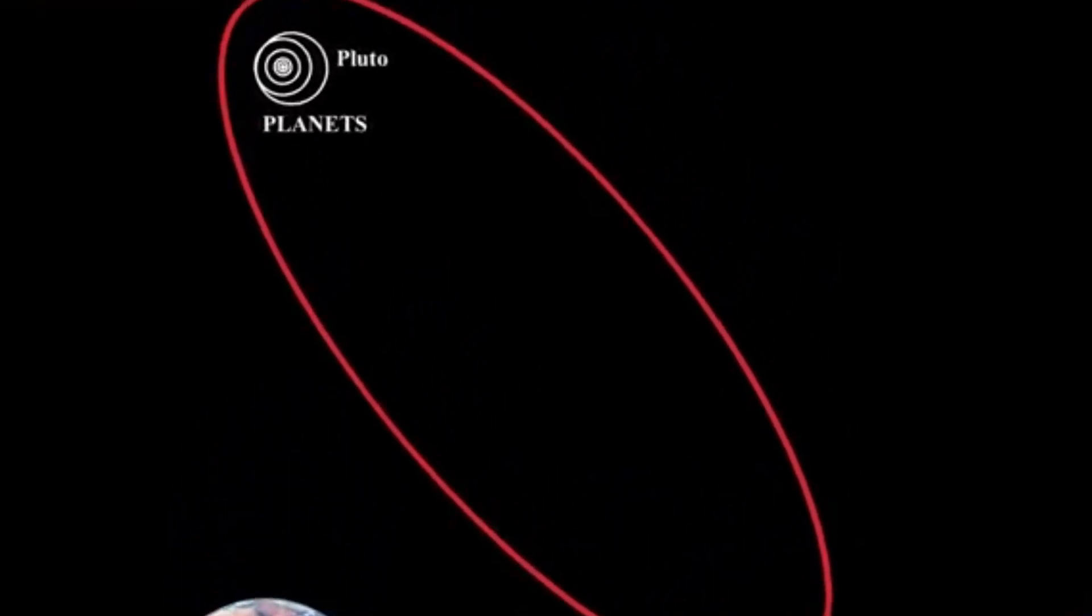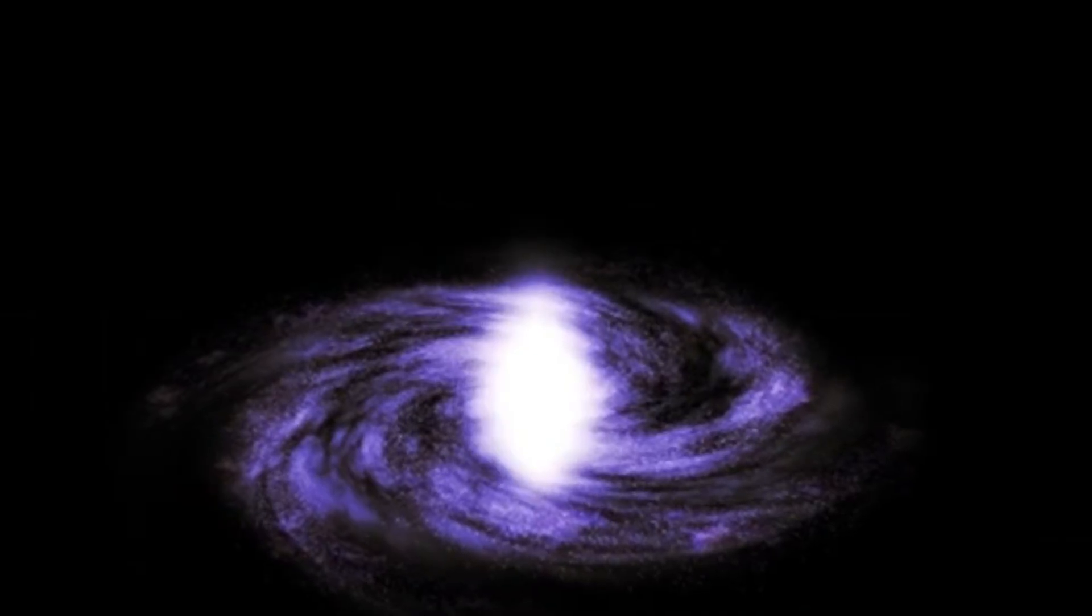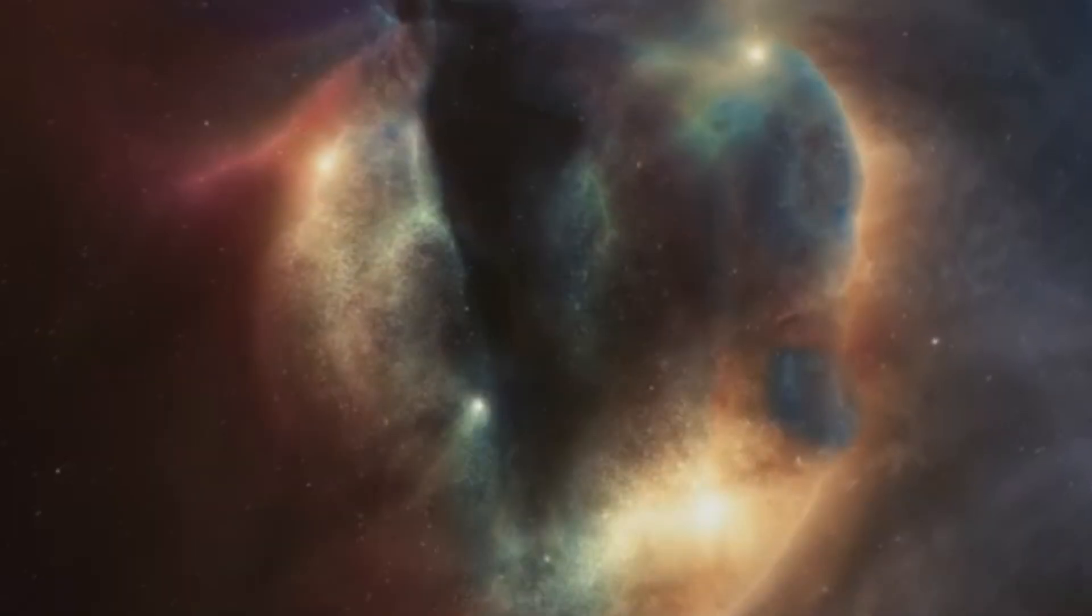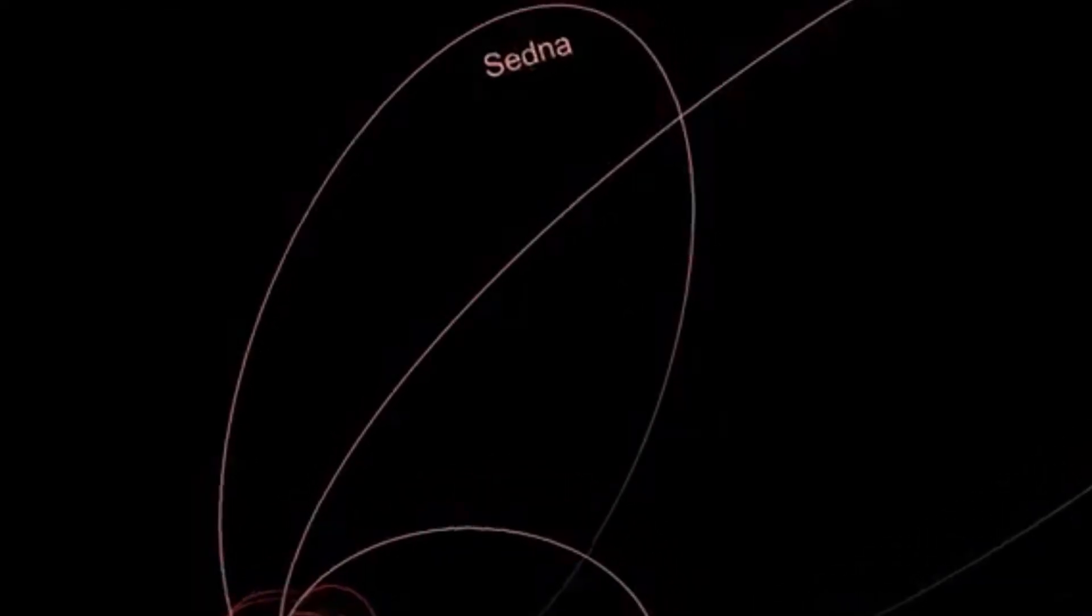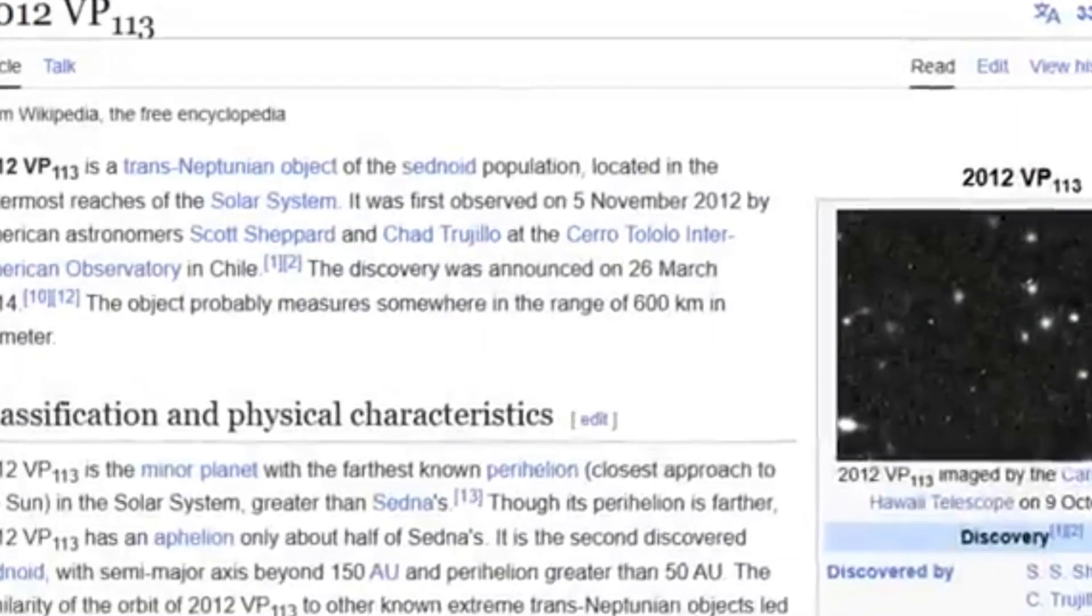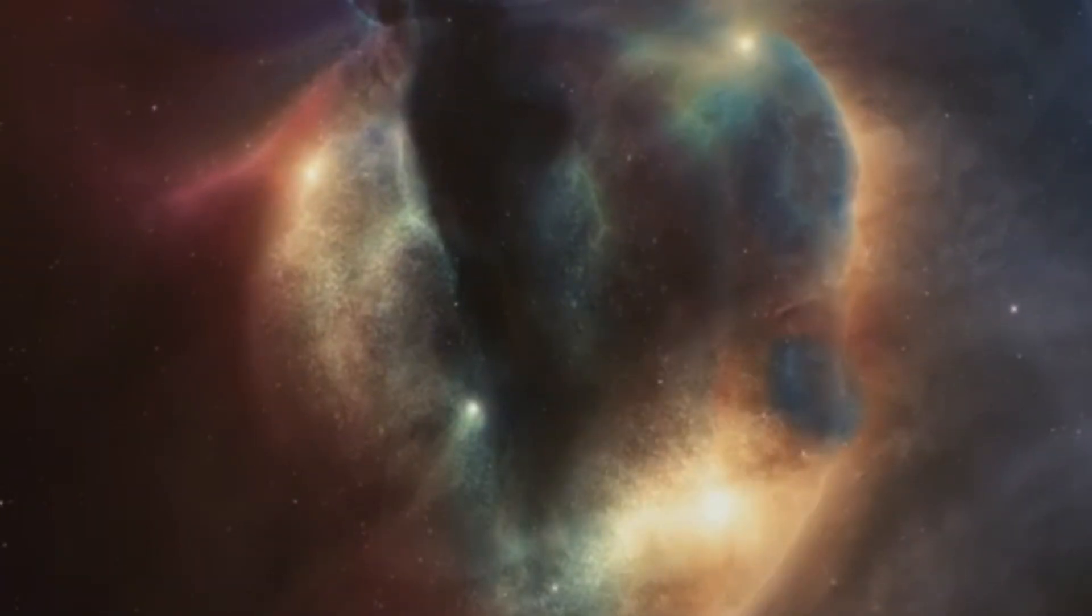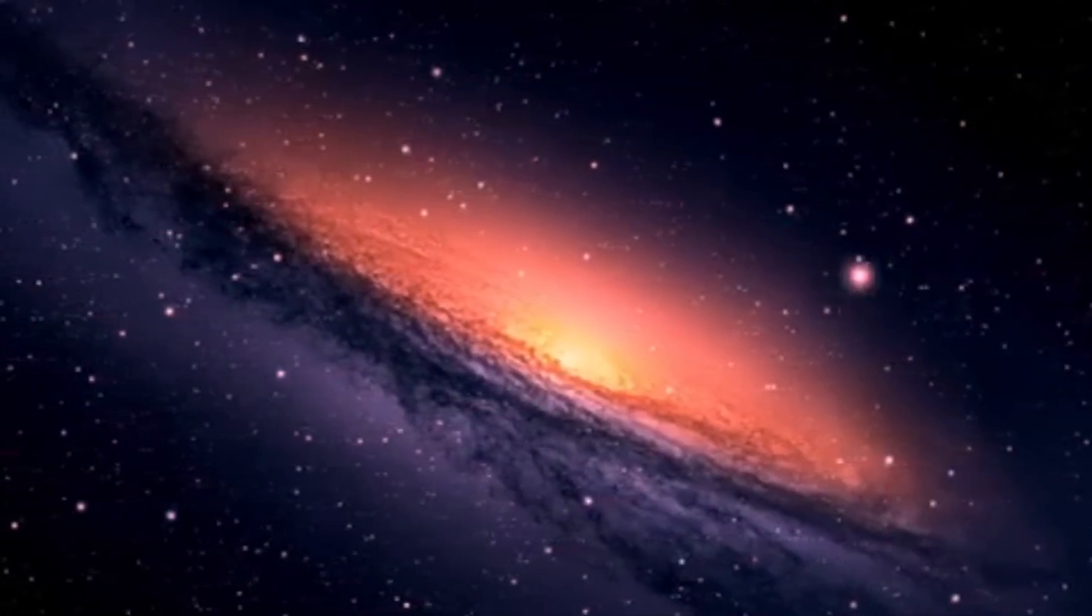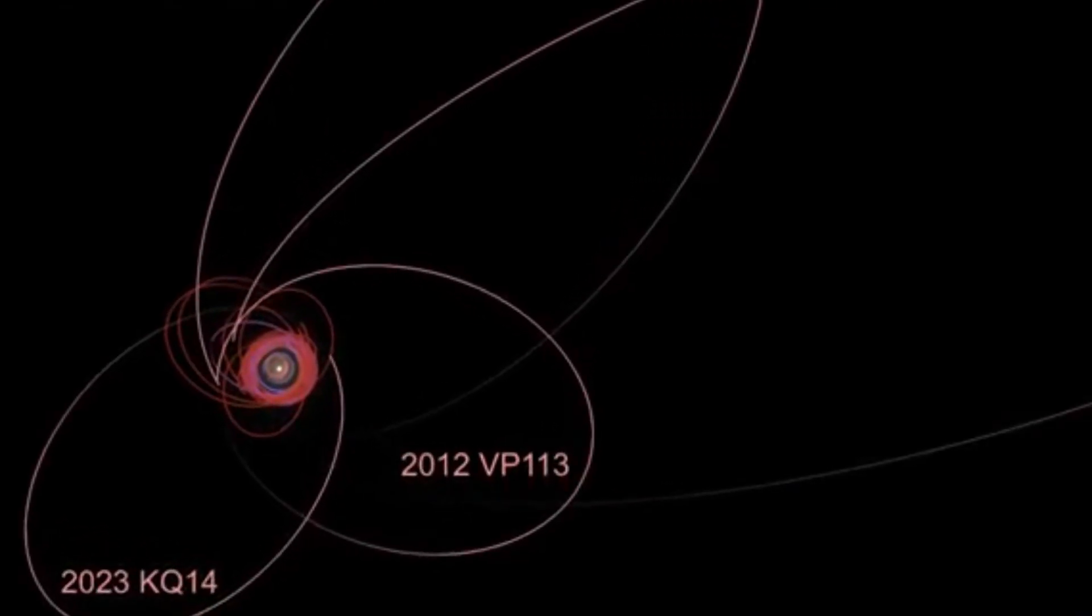The search continues, and each new discovery peels back another layer of the solar system's ancient past. From icy dwarfs to invisible giants, these celestial mysteries call to our deepest instincts as explorers. Whether or not Planet 9 is ever found, the pursuit itself is reshaping how we see our place in the cosmos. And in this vast, dark expanse, every new light we discover tells us that we still have much to learn and many more worlds to find.